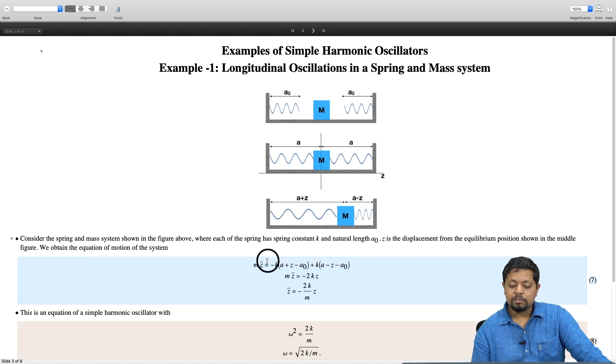Now, adding the two terms, I get the total force and when I simplify, I simply get mz double dot equal to minus 2kz. A and a naught cancel out. I rewrite that equation by dividing by m on both sides, I get z double dot equal to minus 2k/m times z.